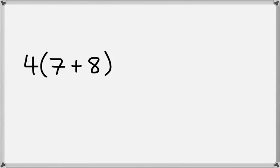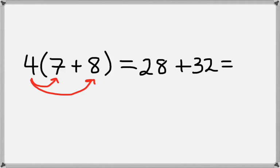So in this first problem, we have 4 times 7 plus 8. So the first thing we want to do is distribute the 4. We'll take 4 times 7, which gives us 28, and then we'll take 4 times 8, which gives us 32. And then we just take 28 plus 32, which is 60.